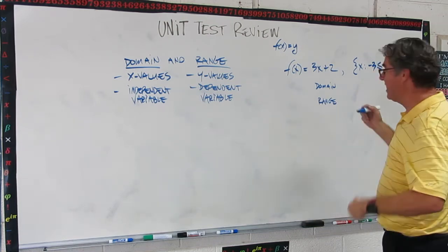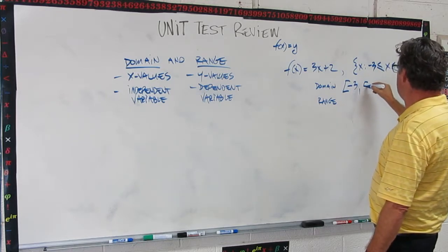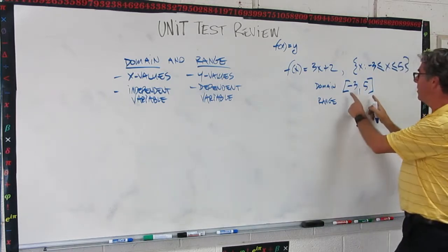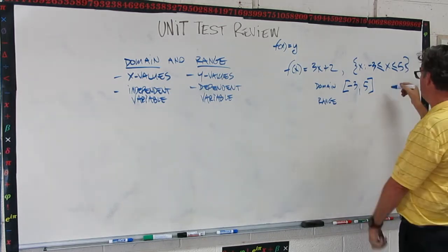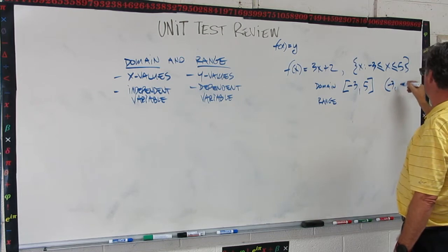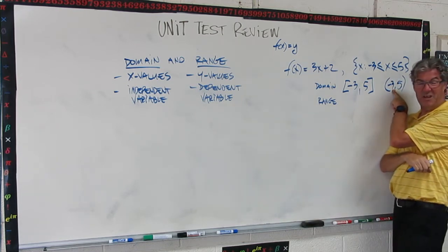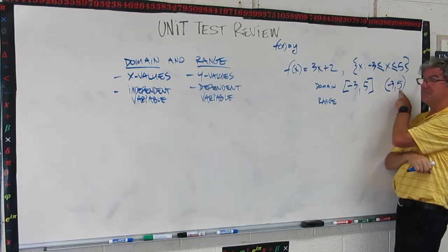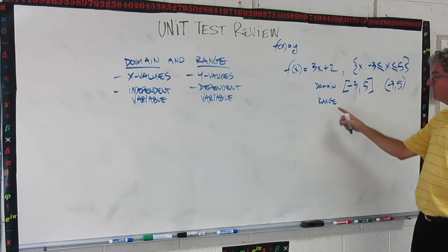So I'm going to write this in a shorthand notation, square brackets, minus 3, 5 square brackets. The square brackets mean that it includes these numbers. If I wrote it like this, it means it's got to be bigger than negative 3, it can get as close as possible, and it's got to be less than 5, but it can get as close as possible. Now the range.